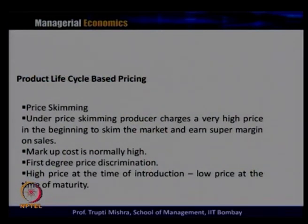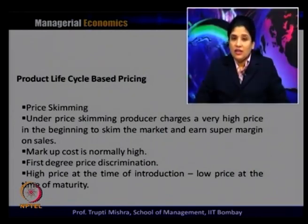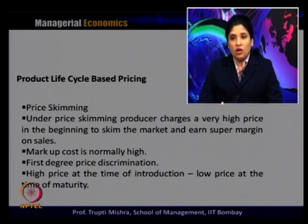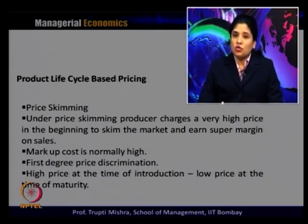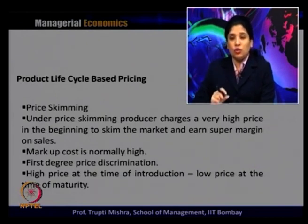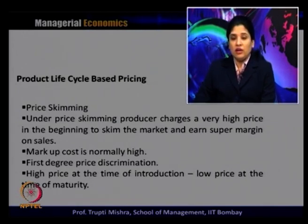On the basis of product life cycle pricing, there are three kinds of pricing techniques. The first is price skimming. Under price skimming, the producer charges a very high price in the beginning to skim the market and earn a super margin on sales. This is similar to first-degree price discrimination, where the monopolist identifies the consumer group ready to pay more and charges them a higher price. The markup cost is normally high.